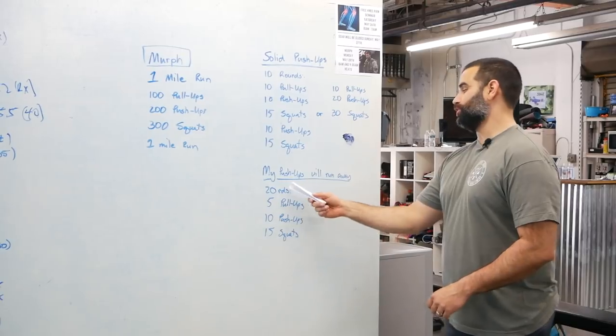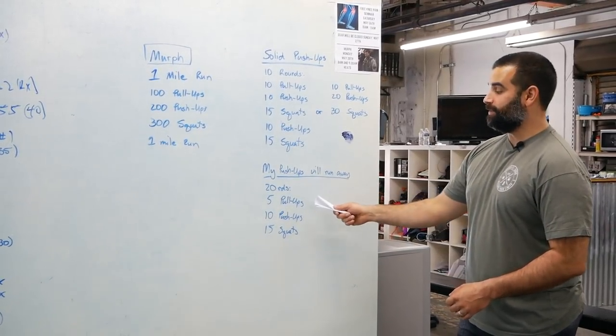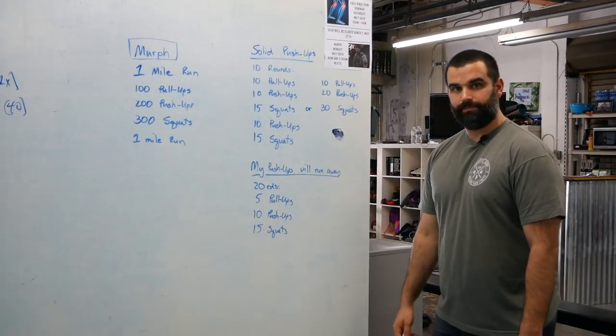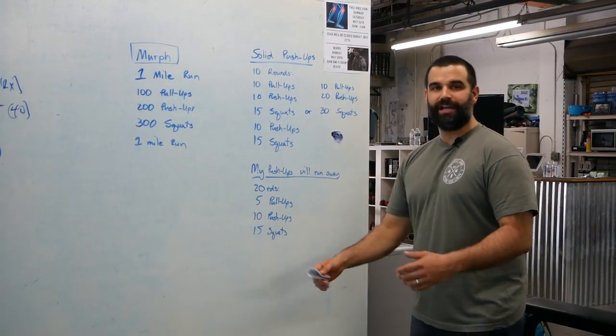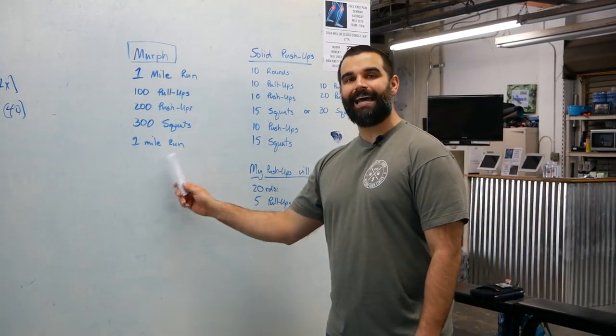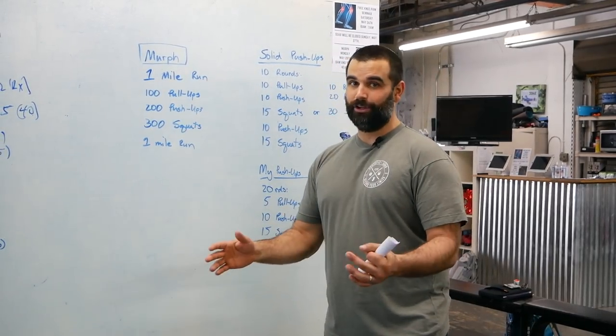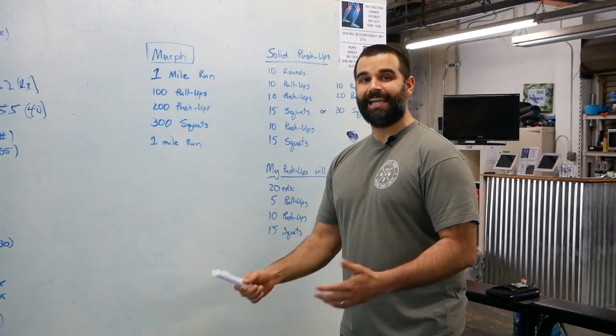If you're someone where those push-ups go away on you, which is a lot of us, we highly recommend going 20 rounds of five pull-ups, 10 push-ups, 15 squats. Make sure you got some way to count it. You can mix and match this any way you want and then attack that last mile. The first 400 meters are there to kind of loosen up your legs. You're going to feel a little jello-y and then get into the zone, stay on task.